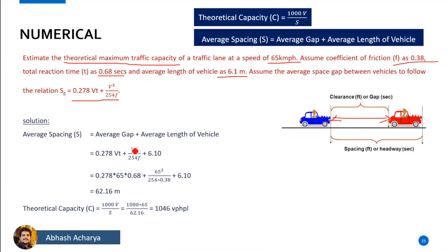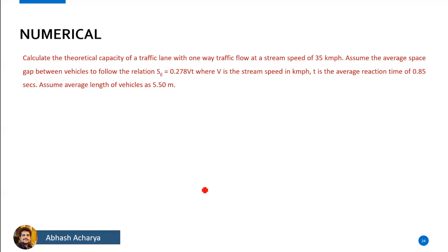But the way you can understand the spacing — if you look at the velocity, the average gap is 0.278bt. If you look at b² by 254f, you can mention this. The average length of the vehicle is 5.5 meters. When the gap is 0.278bt, you can find the same linear value, plus b² by 254f.